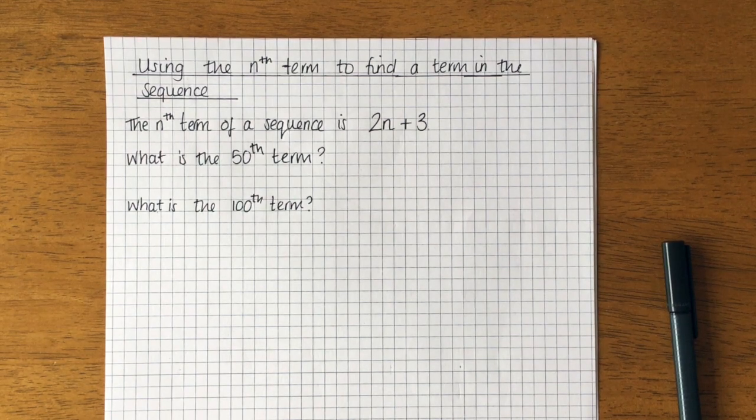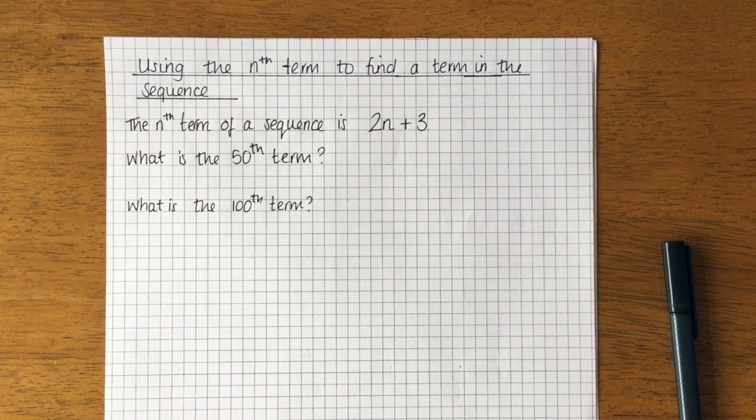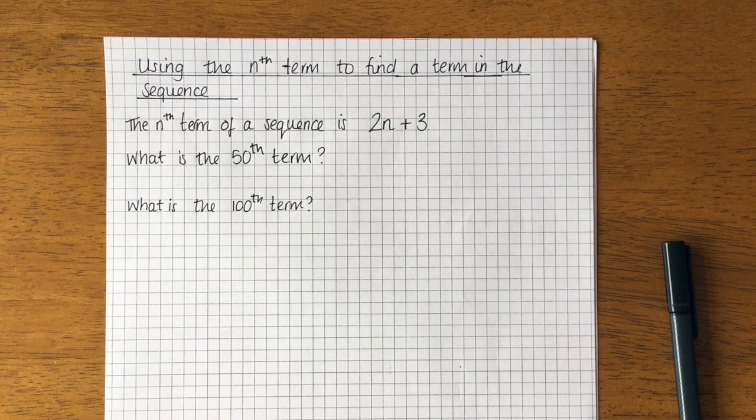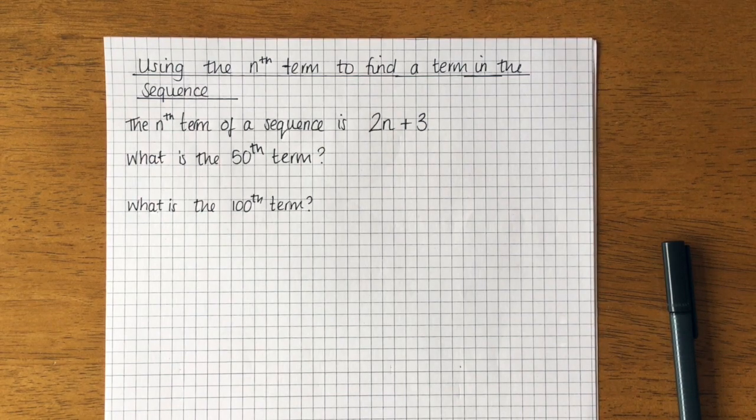Hi everyone. What we're going to do today is use the nth term of a sequence that's already been given to us and find any number that appears in that sequence. I've picked specific ones for you so we're choosing the 50th and the 100th term.